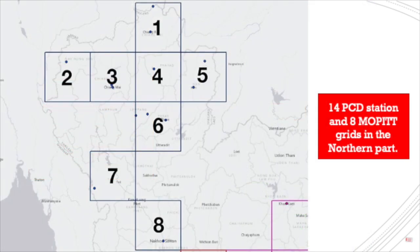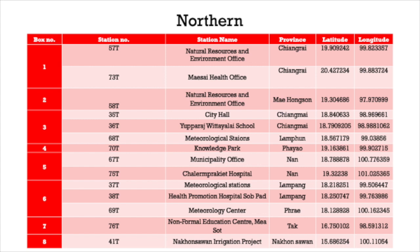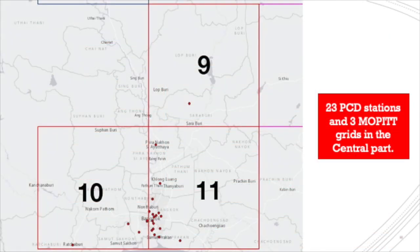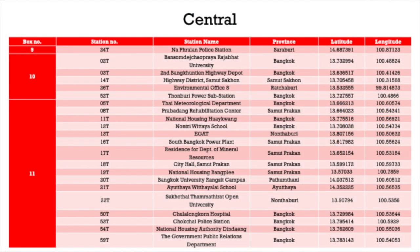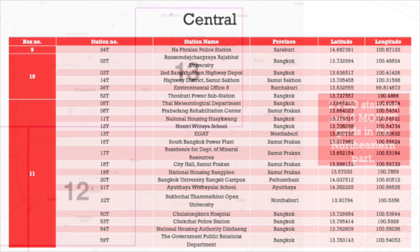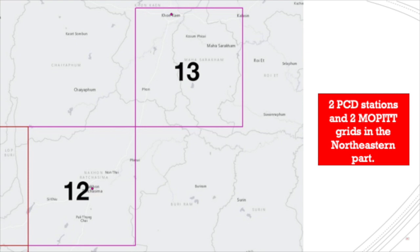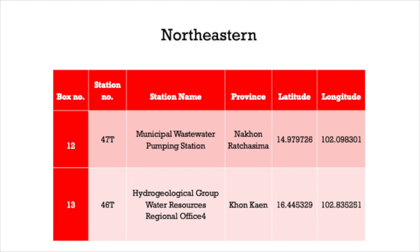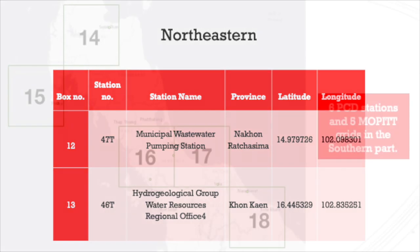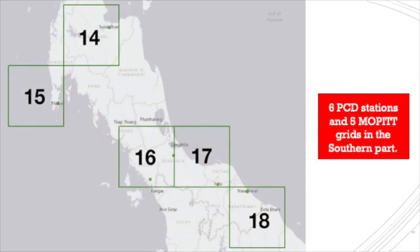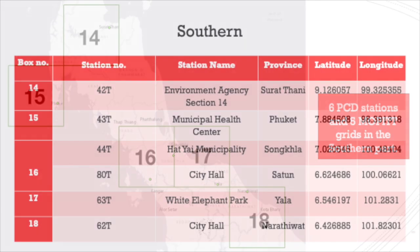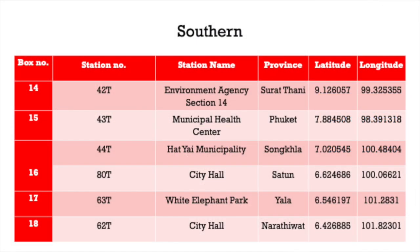There are 14 PCD stations and 8 MOPITT boxes in the Northern part, and here is the list of all PCD stations in the Northern part. There are 23 PCD stations and 3 MOPITT boxes in the Central part, with the full list shown here. There are 2 PCD stations and 2 MOPITT boxes in the Northeastern part, and 6 PCD stations and 5 MOPITT boxes in the Southern part.